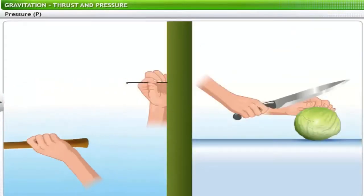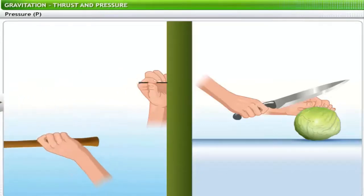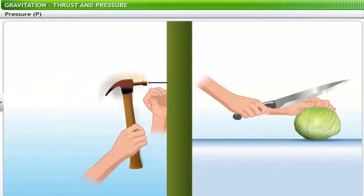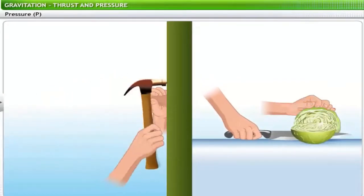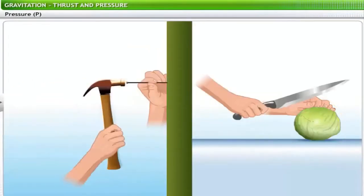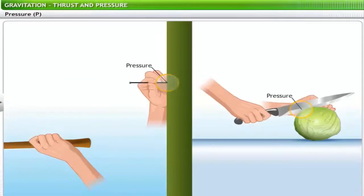We have seen that nails have pointed tips to help us drive them into surfaces. Why is it important for a nail to have a pointed tip? For that matter, why is it important to have a sharp knife to chop vegetables? The force you apply in driving a nail or chopping vegetables is translated into pressure, depending upon the surface area of the object on which the force is applied.